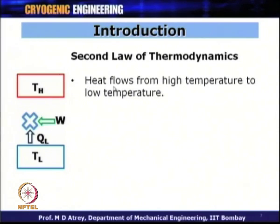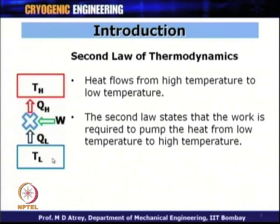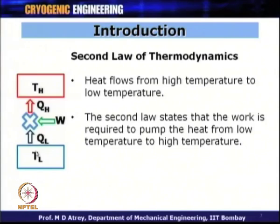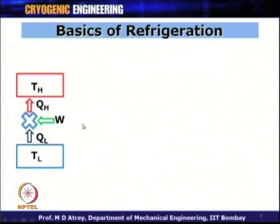Heat naturally flows from high temperature to low temperature. The second law states that if we want to transfer heat from low temperature to high temperature, we have to do some work. Work W is required to pump heat from low temperature QL to high temperature. Hence, work input W is required to generate and maintain low temperatures TL.